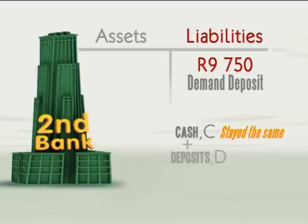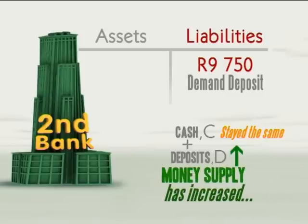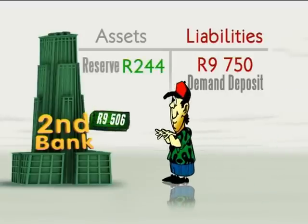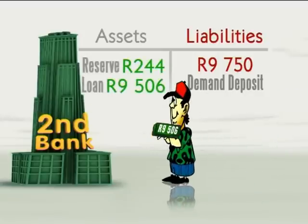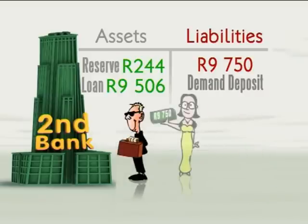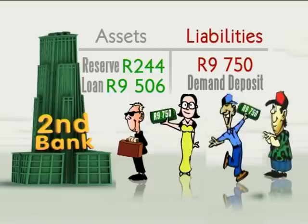The banks are creating money. Second Bank can go on to lend most of that deposit to one of their customers, excluding the 2.5% cash reserve requirement, of course. And so it continues. With each new loan that banks approve, made possible by demand deposits from their customers, the money supply increases. Other financial institutions can act as intermediaries and transfer money from here to there.